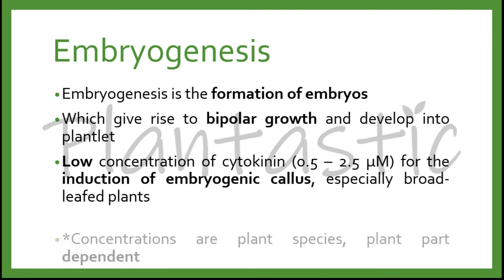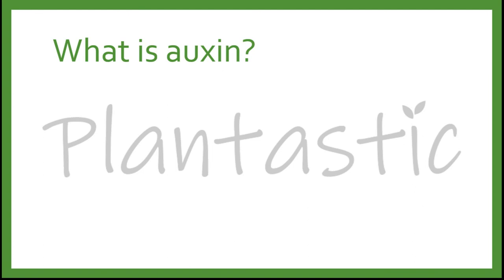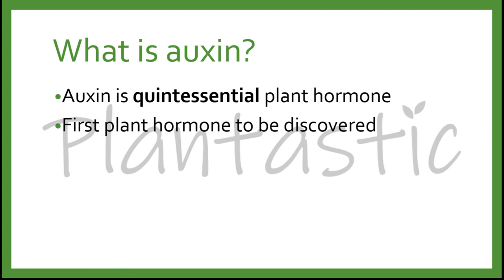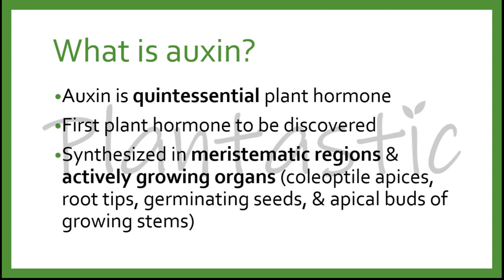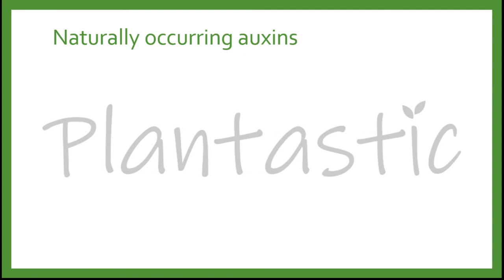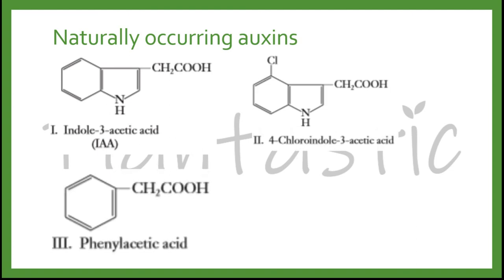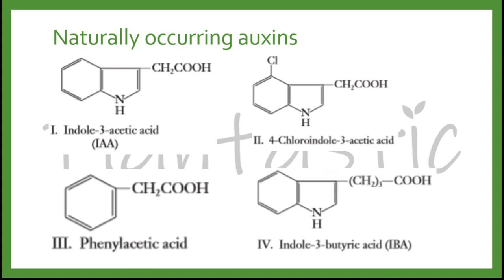Let's move on to osin. Osin is a quintessential plant hormone and the first plant hormone to be discovered among all the hormones. It is synthesized in meristematic regions and actively growing organs such as coleoptilar apices, root tips, germinating seeds, and apical buds of growing stems. The naturally occurring osins are IAA, 4-chloro-indole-3-acetic acid, phenylacetic acid, and indole-3-butyric acid, known as IBA. Commonly, IAA and IBA are seen in most papers.